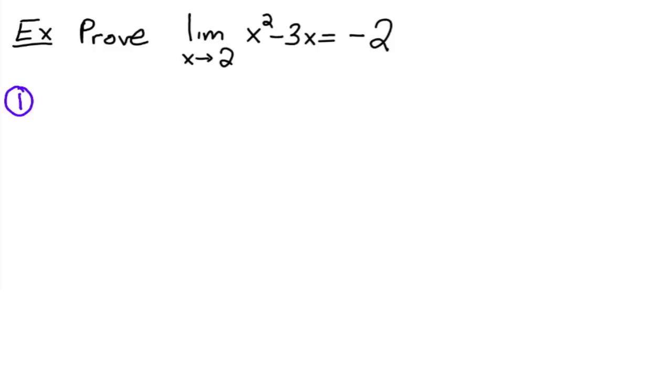But the first step, if you remember, is to write down f of x minus l is less than epsilon, which is what you want. So x squared minus 3x plus 2 is less than epsilon. This is what we want. And x minus c, or x minus 2, is less than delta. This is what we know.